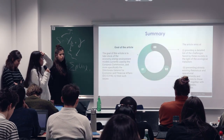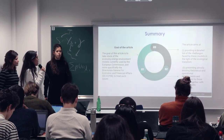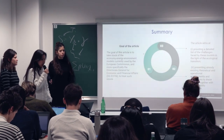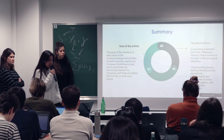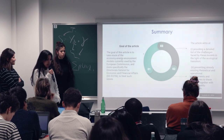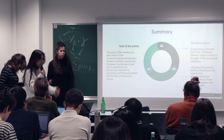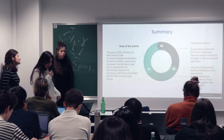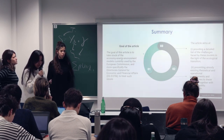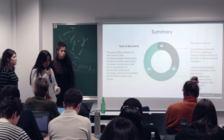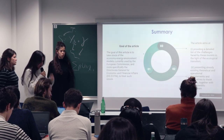To start with, we need to address the goal of this article. The goal is to take stock of the economy-energy-environment models currently used by the European Commission, and most specifically by the Directorate General for Economic and Financial Affairs. The paper has two aims: providing a detailed list of the challenges faced by these models in the light of the ecological transition, and presenting existing theoretical and operational complements and alternatives to these models.